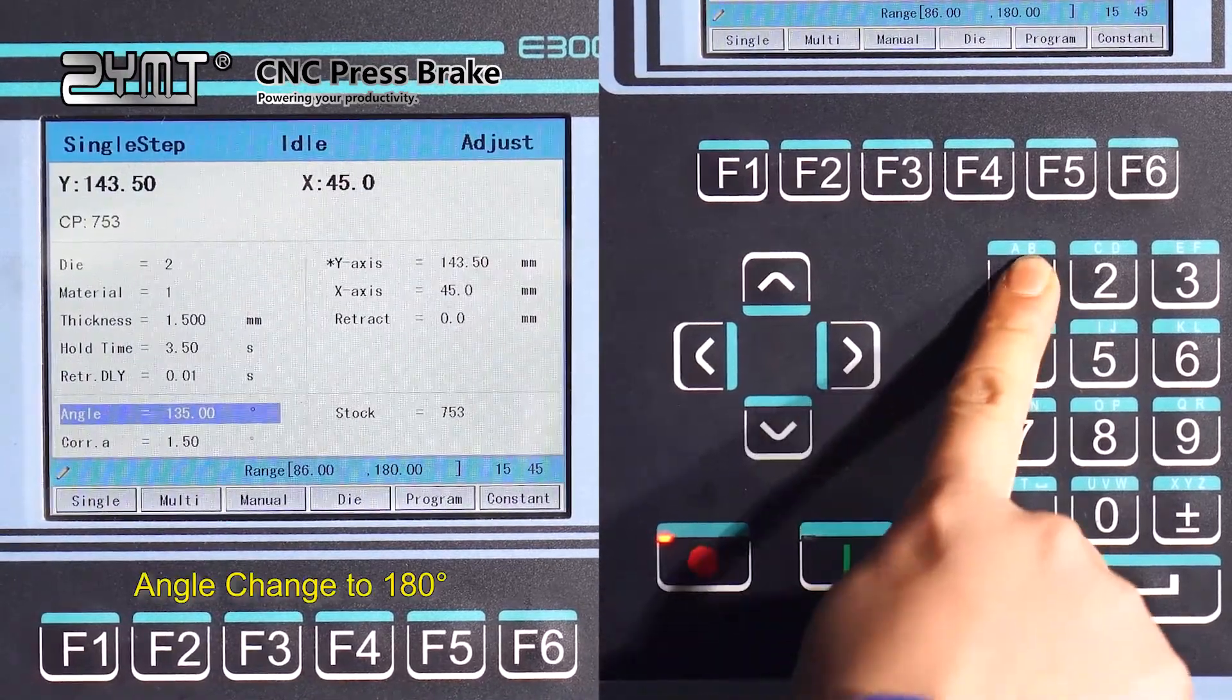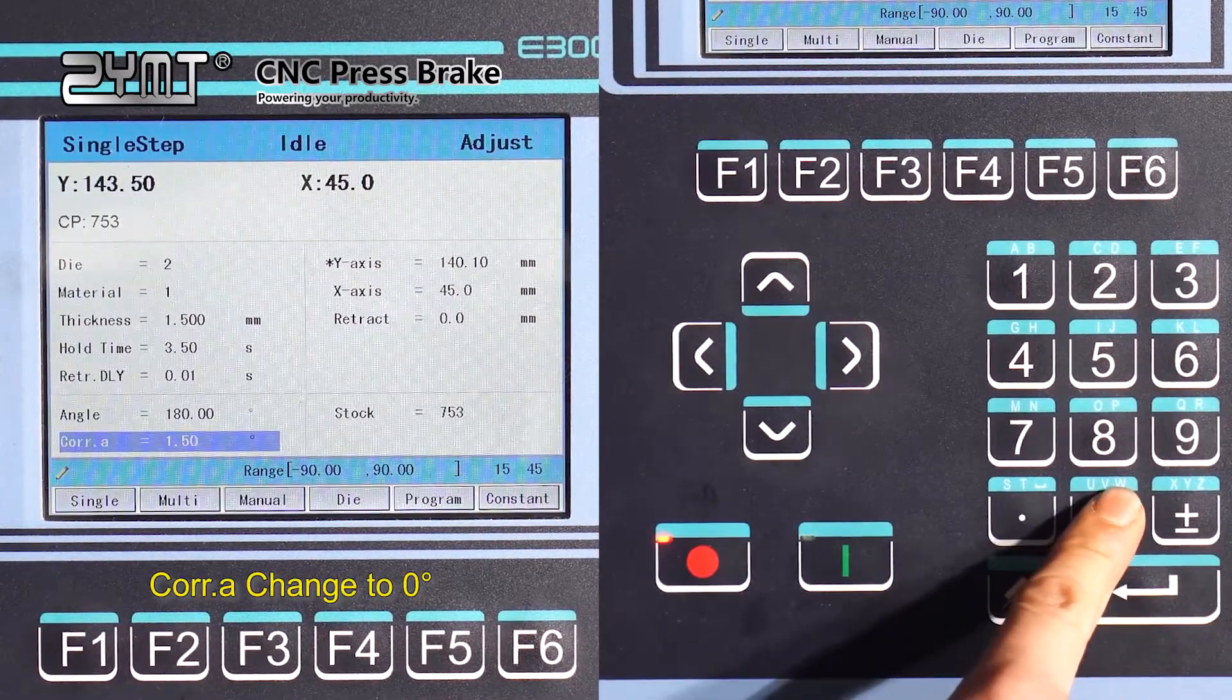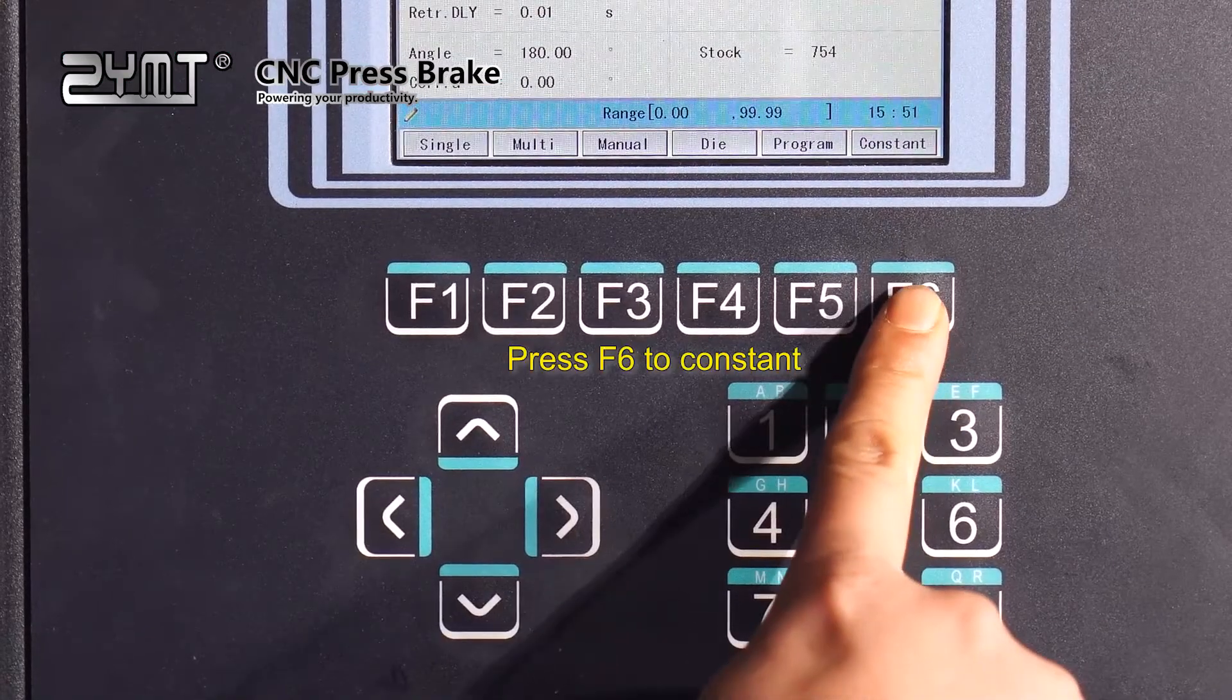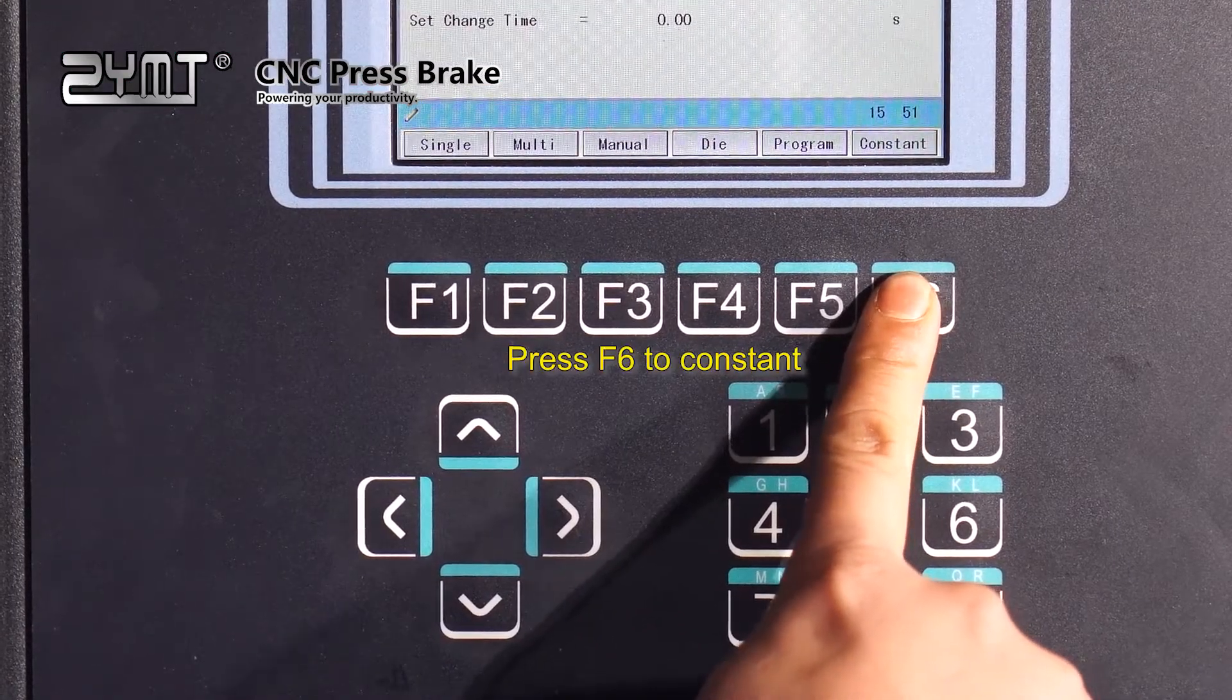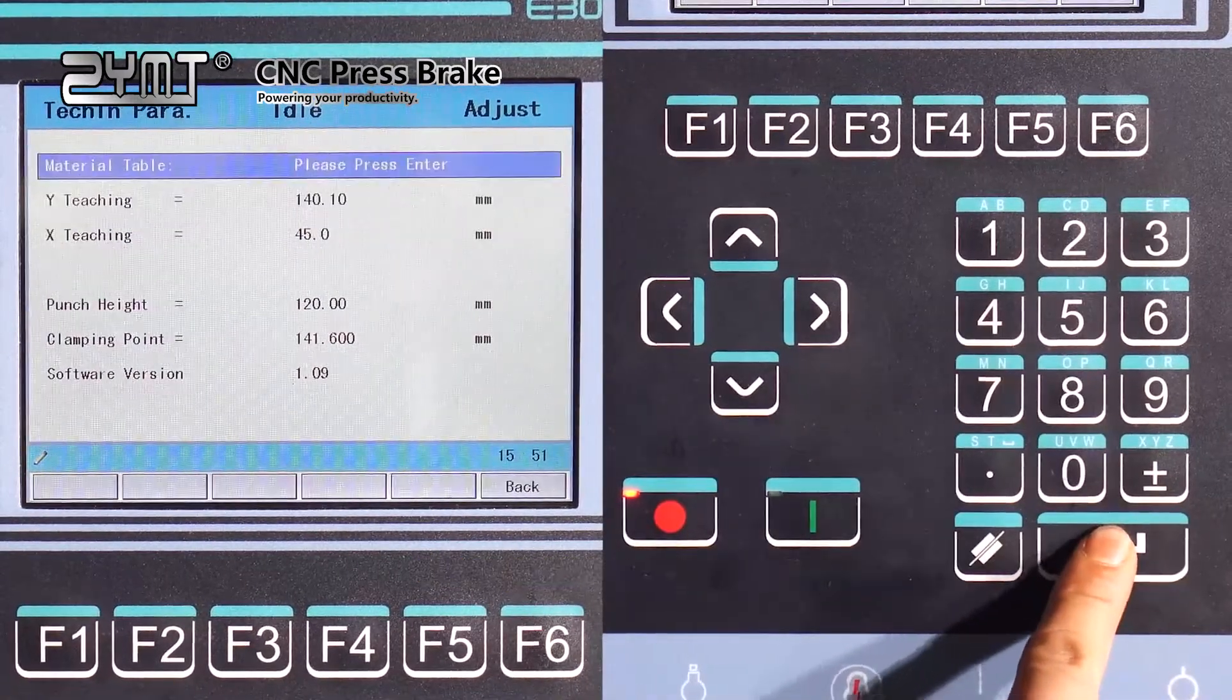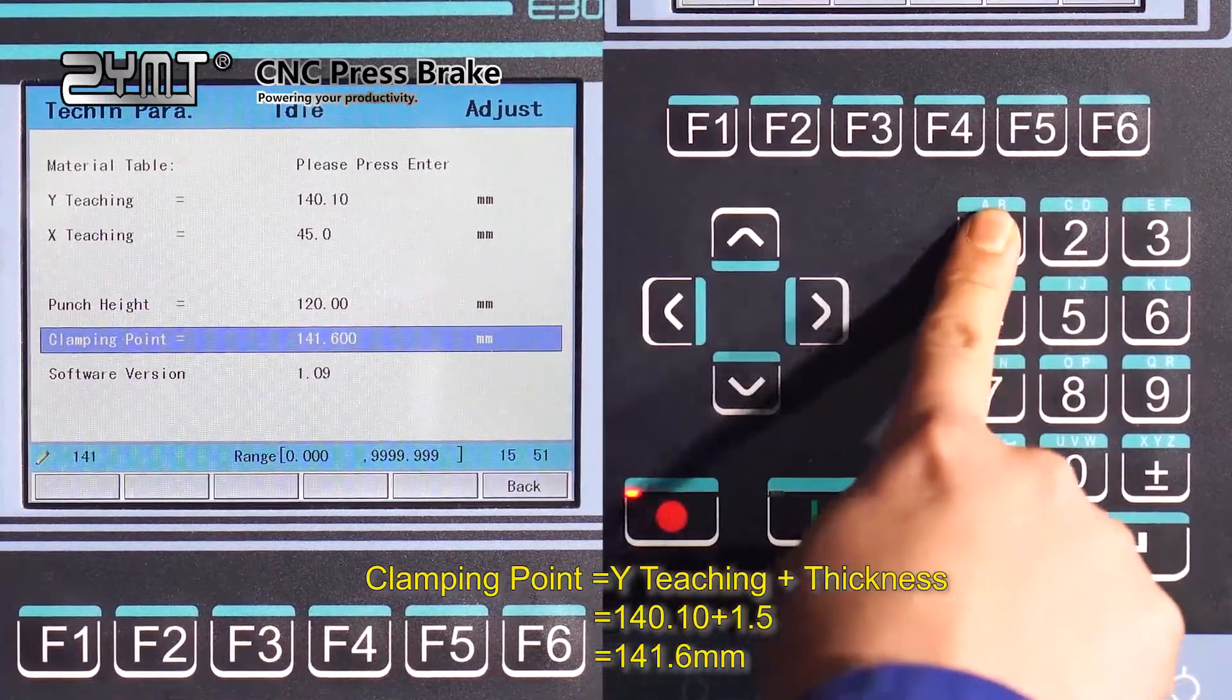Angle change to 180 degrees. Corr.A change to 0 degrees. Press F6 to constant. Enter password 1212. Clamping point. Clamping point equals 141.6mm.